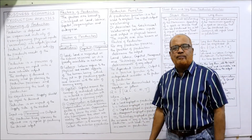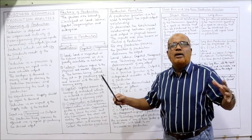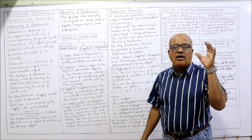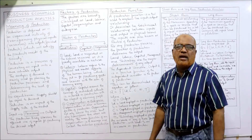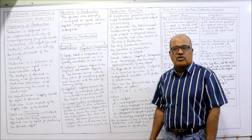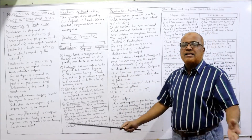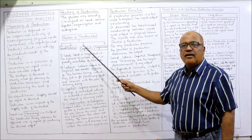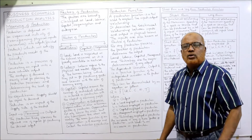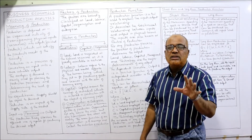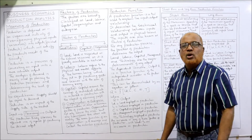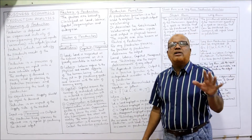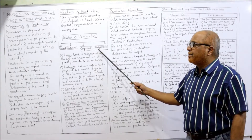Now I am going to explain the factors of production. Innumerable factors are used, but we select a few resources that are very important in every production. Factors are broadly classified into 4 categories: land, labour, capital, and organisation. Don't think only 4 resources are used — many factors exist, but these 4 are the most important.